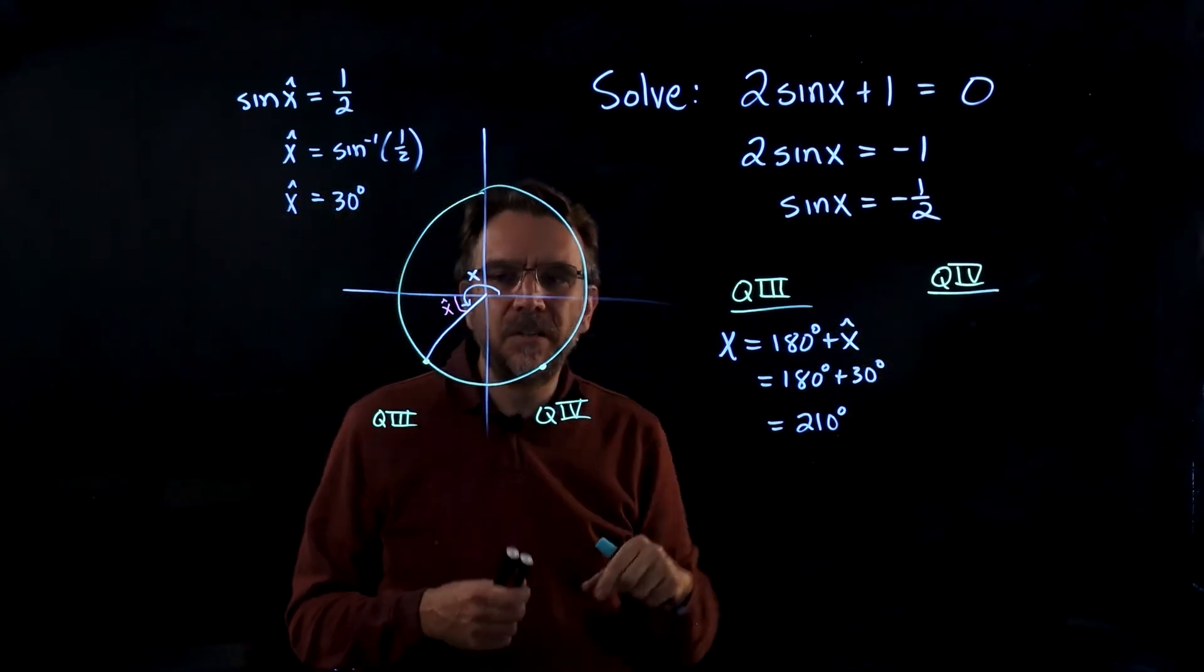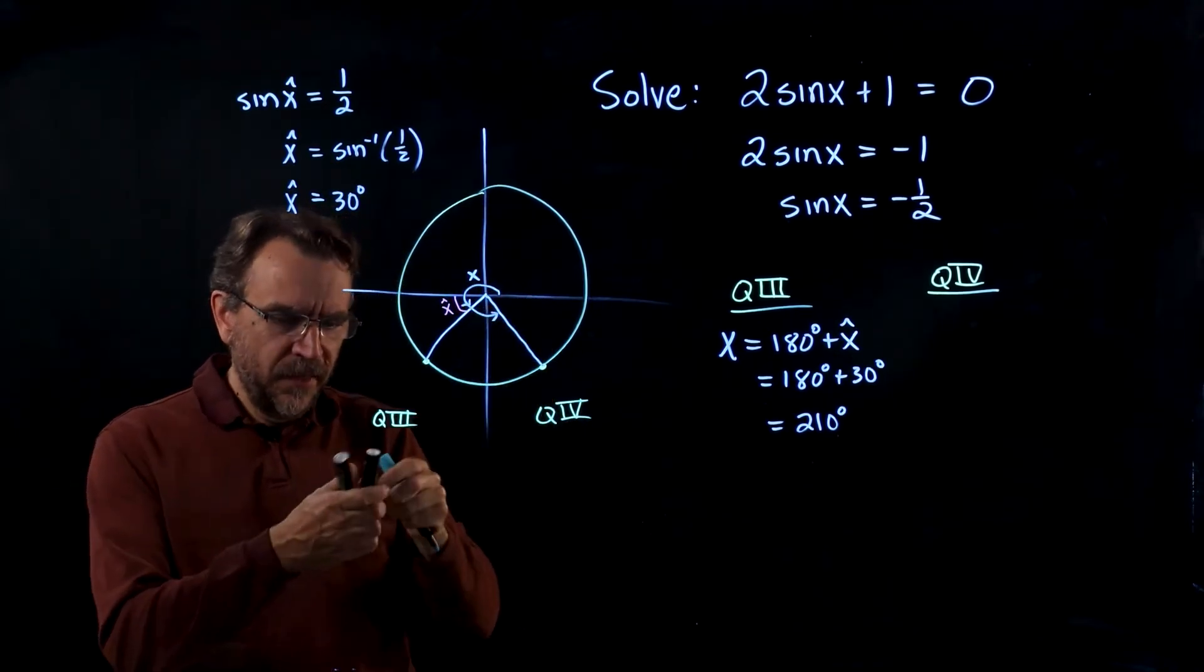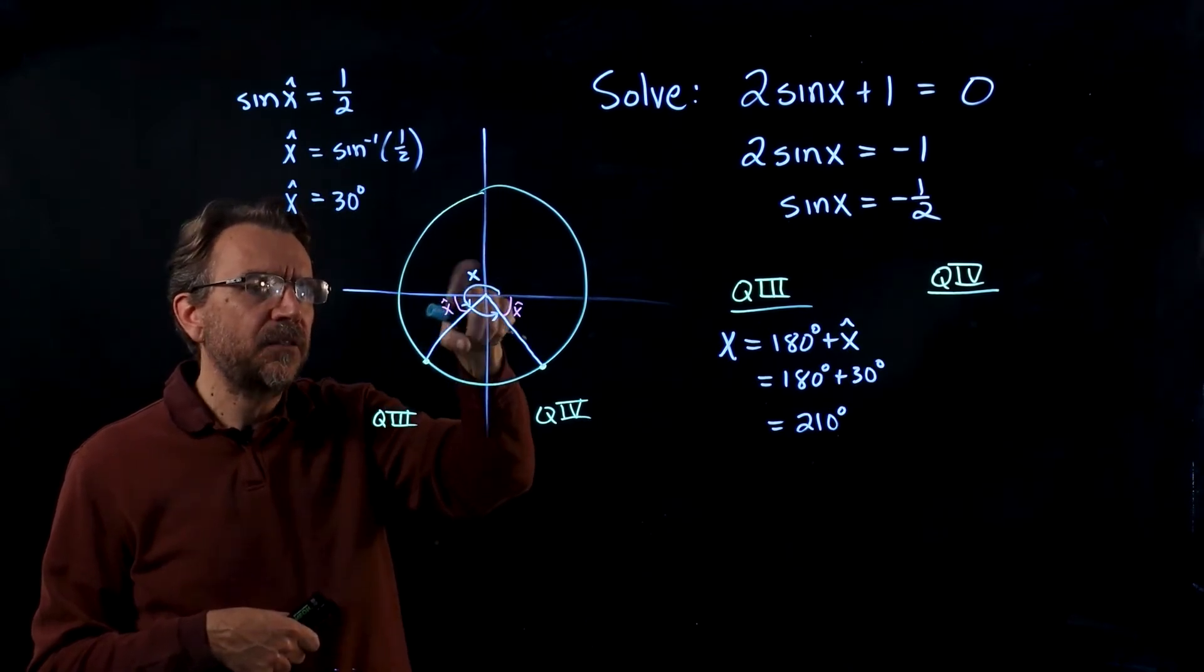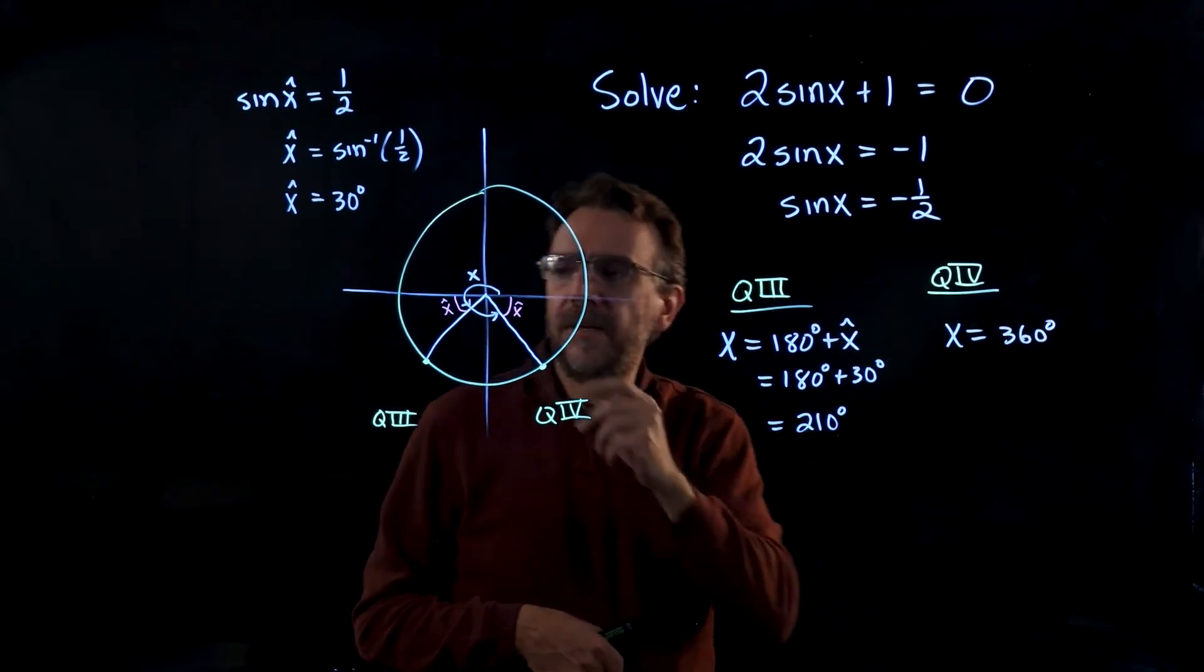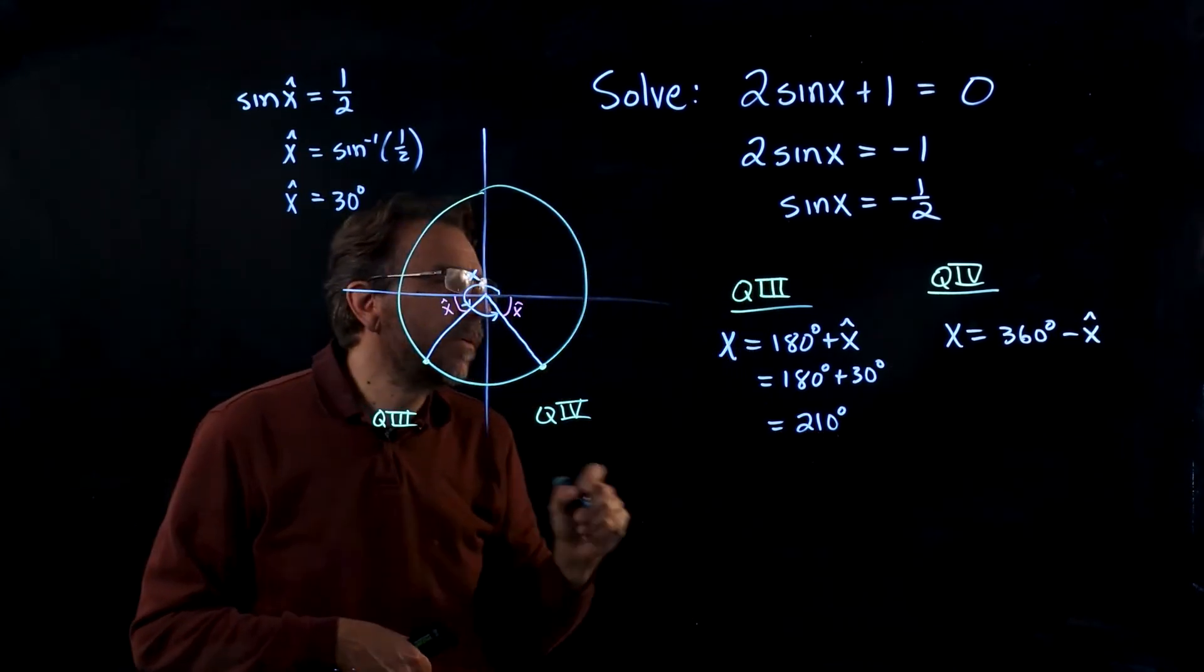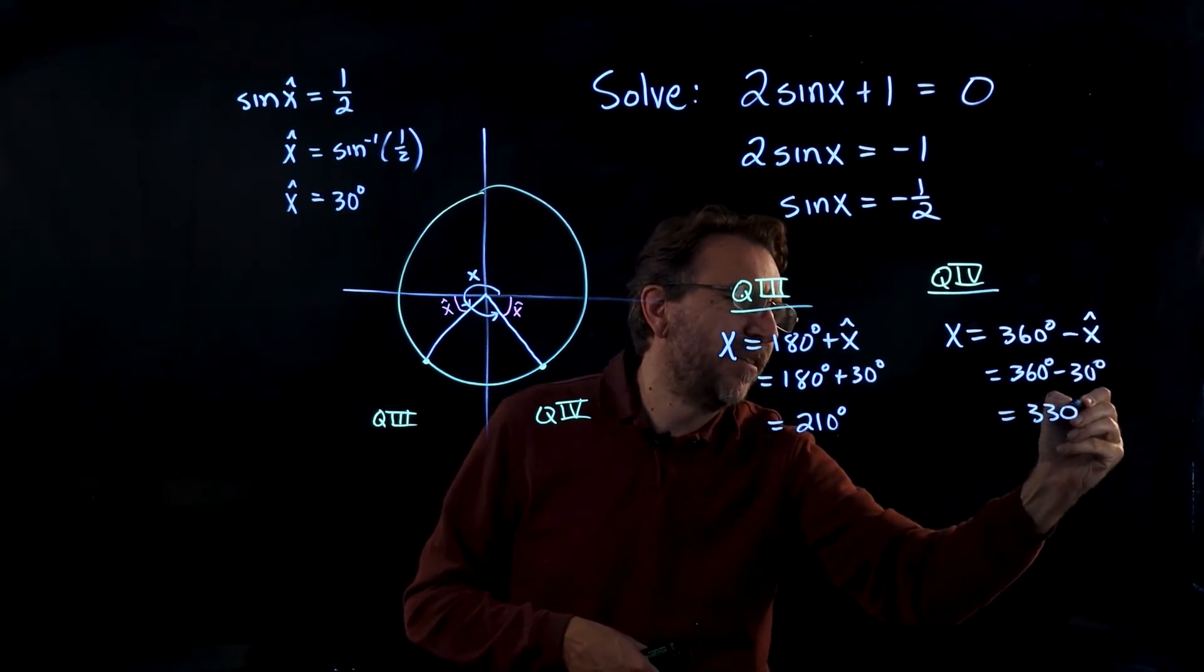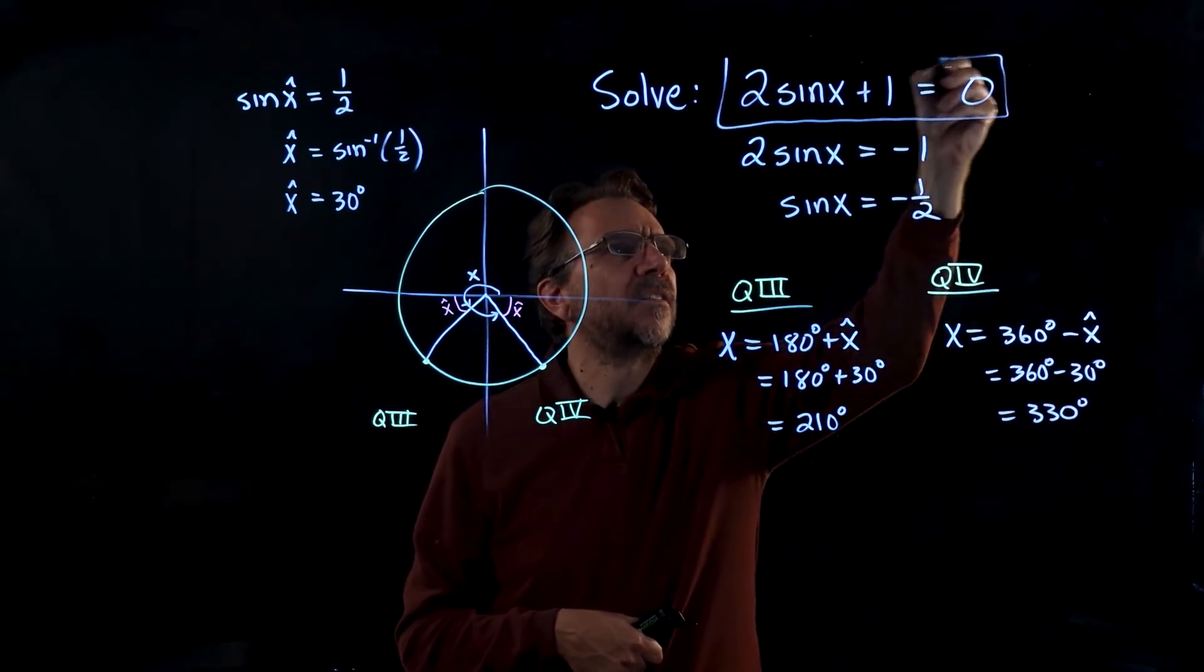Now let's look at the angle in Q4. In Q4 the calculation is a little different to get the actual angle x. We'll take 360 degrees, all the way around one revolution, then subtract the reference angle. In this case we get 360 degrees minus 30 degrees, which equals 330 degrees. If you plug that into the original, it does solve it.